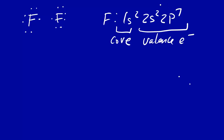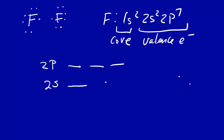Valence bond theory concerns the valence electrons. If we look at the valence electrons — here's the 2s and here's the 2p, which has three orbitals. Using the Aufbau principle and Hund's rule, we start filling these up, placing 7 valence electrons total across the 2s and 2p orbitals.